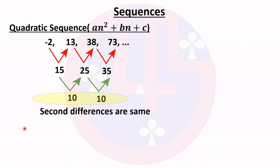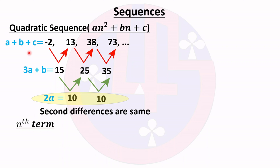For the nth term, we use the same format: 2a = second difference, 3a + b = first difference, and a + b + c = first term. Solving: 2a = 10, so a = 10/2 = 5.